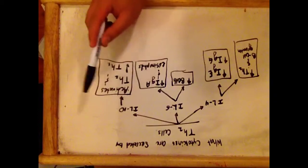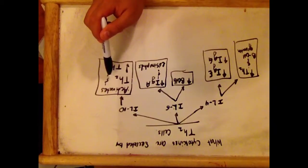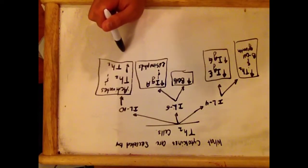IL-10, it activates T helper 2 cells, increases the production of T helper 2 cells, and it decreases or inhibits the T helper 1 cells.